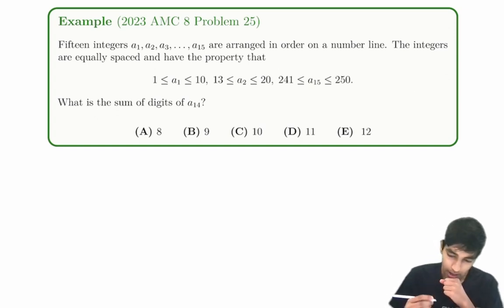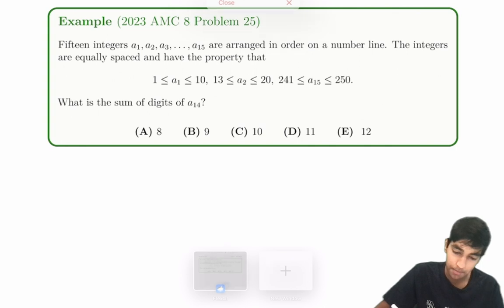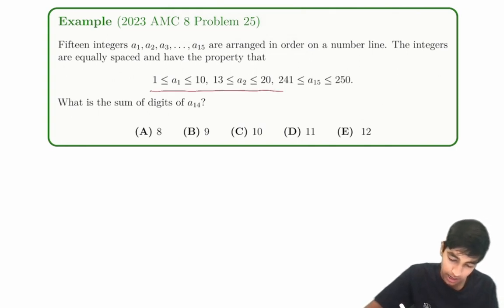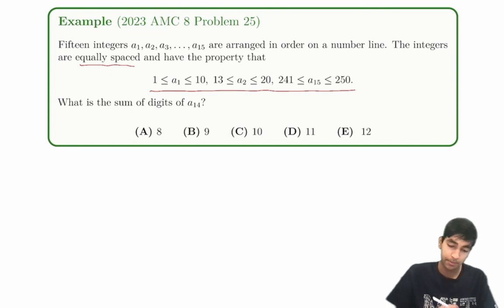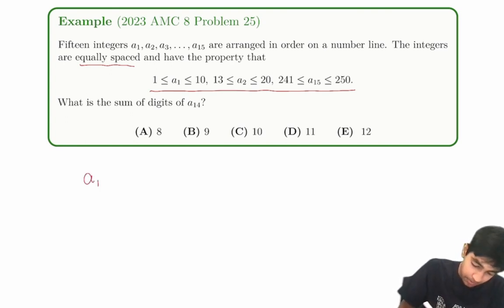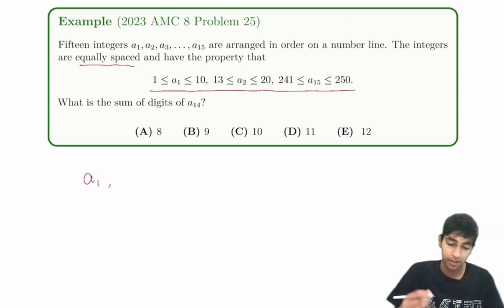Essentially, we're just trying to find the value of a14, and we can then sum the digits. So what are the key conditions in this problem? Obviously, we've got this giant thing. But another thing is this equally spaced, which is also super important.